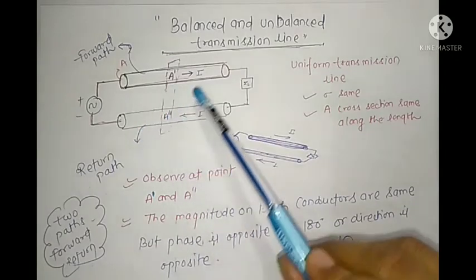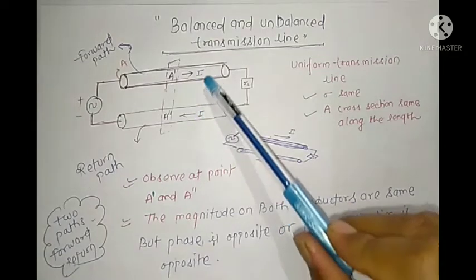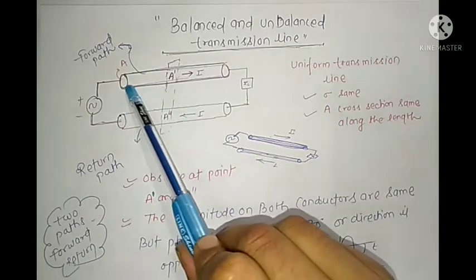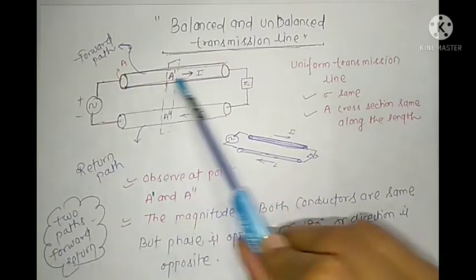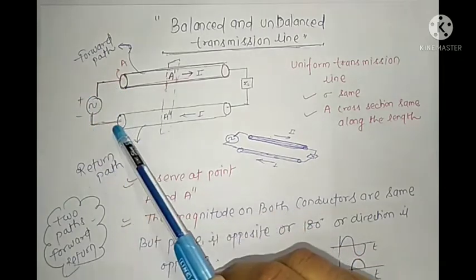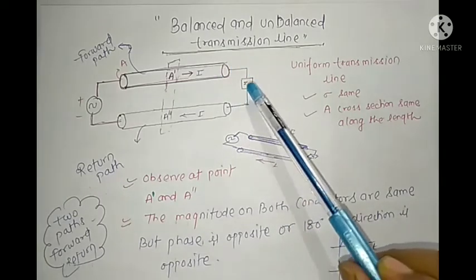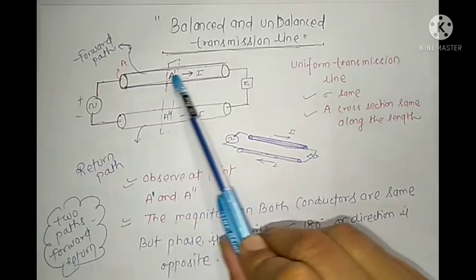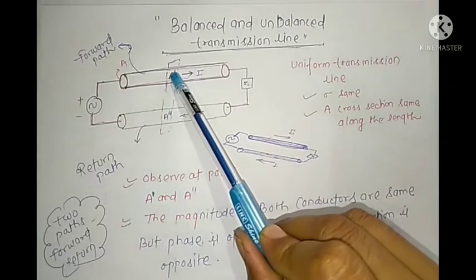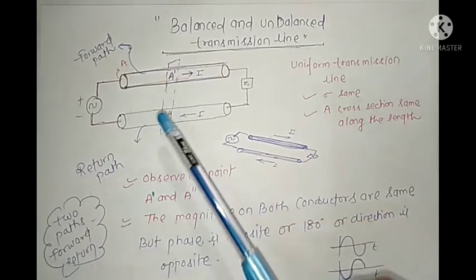Observe this example - we can say this transmission line is an example of a uniform transmission line because the cross-sectional area is the same along its length for both conductors. One end of the conductor is connected to the excitation and the other end is connected to the load. This path is known as the forward path and this path is known as the backward path.